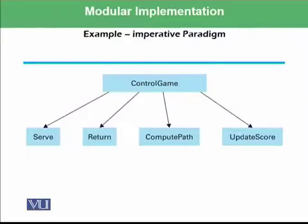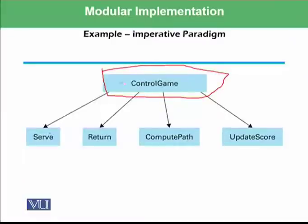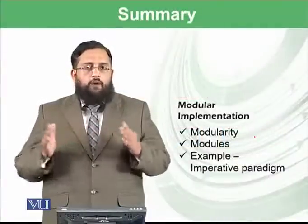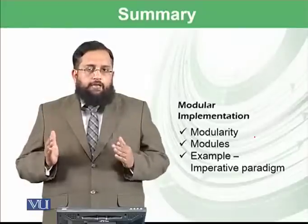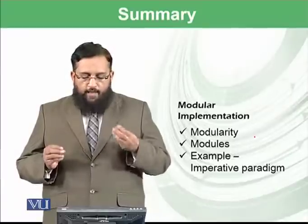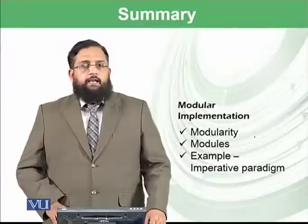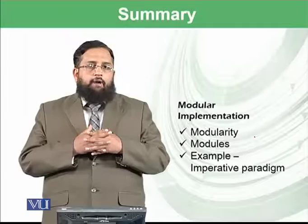There is one more module called control game, which coordinates all the other modules. The control game module first calls the serve module, then the return module; compute path is calculated after serve and return, and then update score is calculated. To summarize: software should be divided into small, manageable units, and each unit is known as a module. We discussed examples from the imperative paradigm showing how modules can be identified. Next, we will see how these modules interact with each other and what makes a good module.